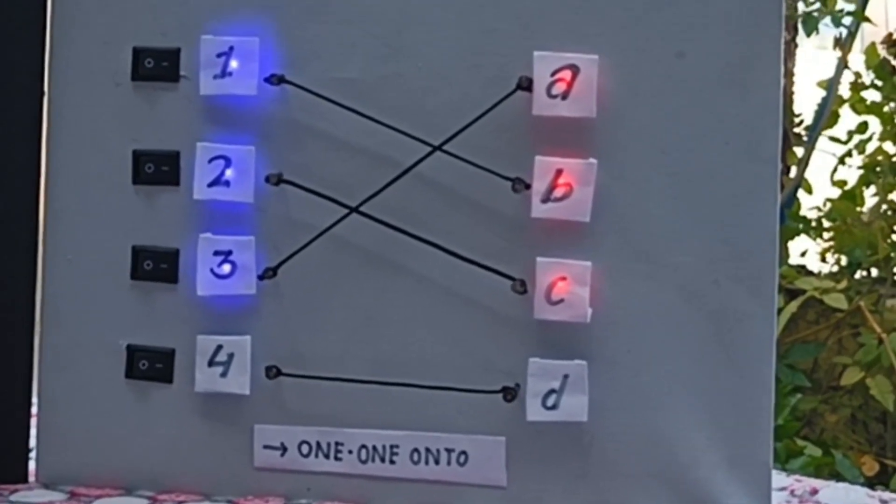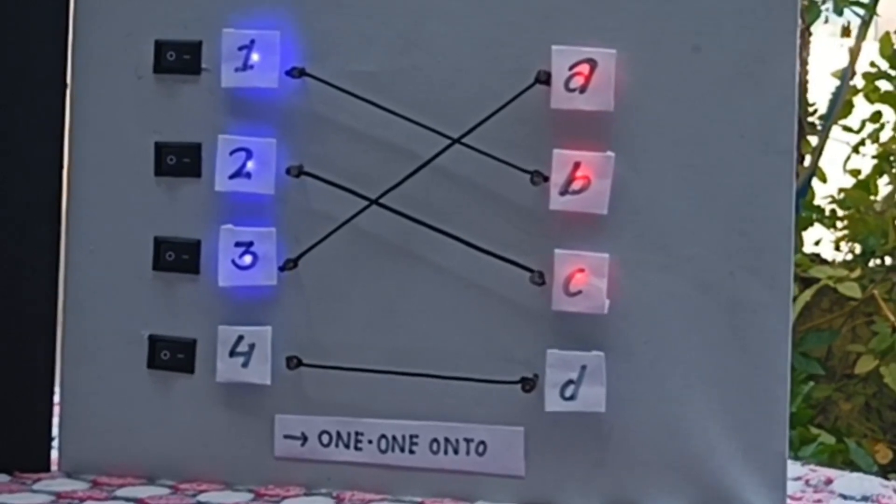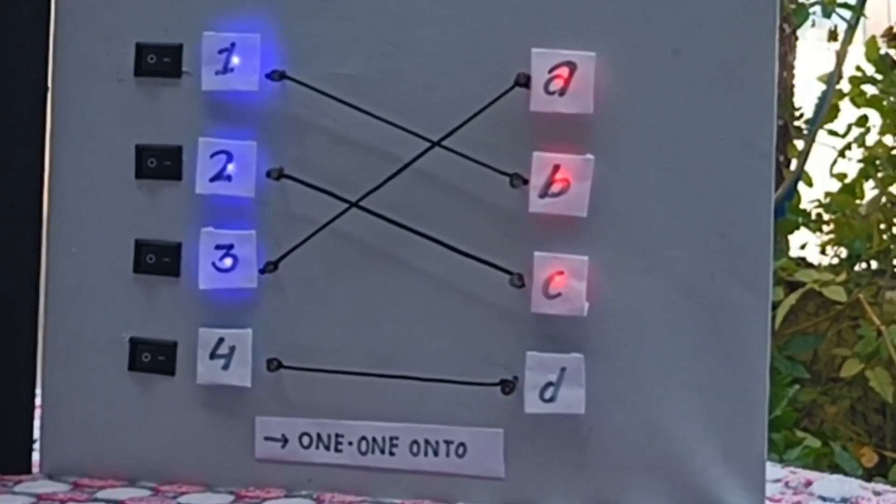One-one onto. One-one because each element in set A is mapped to single element of set B, and onto because all elements in set B have its pre-image in set A.